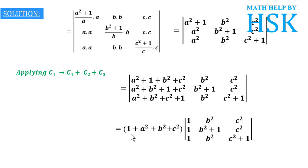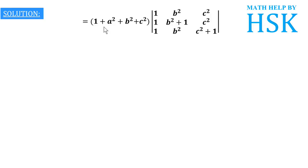So I can take 1 + a² + b² + c² as common from column 1. On taking this factor out, the column 1 entries become 1, 1, 1, and the other two columns remain as they are. Since all terms in column 1 are now 1, it is very easy to make them equal to 0 using row operations.